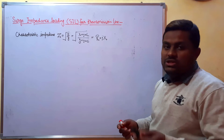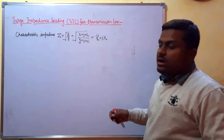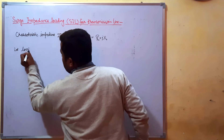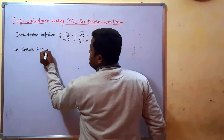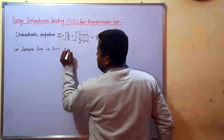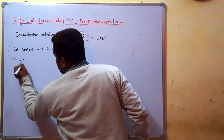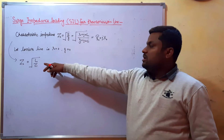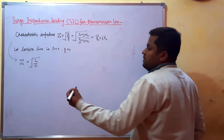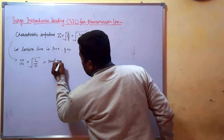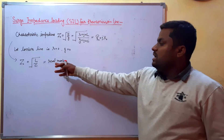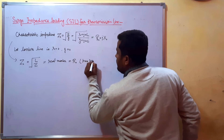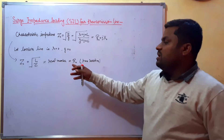Now consider the condition when the line is lossless, that is when R and G are equal to zero. For a lossless line, the characteristic impedance becomes Z0 = √(L/C), which is a pure real number with no imaginary term. So for a lossless line, the characteristic impedance becomes purely resistive.